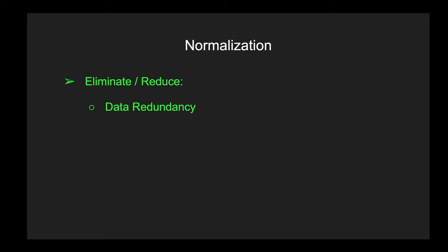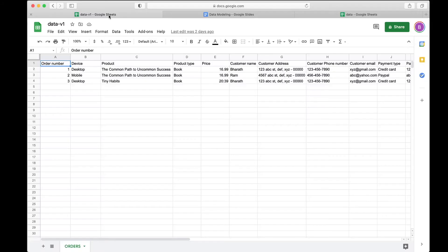Once you have this basic table design, you can look for data redundancy — where your data is repetitive — and start eliminating it by normalizing your tables. Data redundancy causes data anomalies: when you have multiple occurrences of the same data and you update it, you have to update it in many places. If you forget even one place, you end up with two versions of the same data, creating data inconsistency.